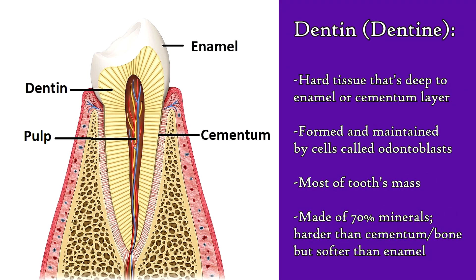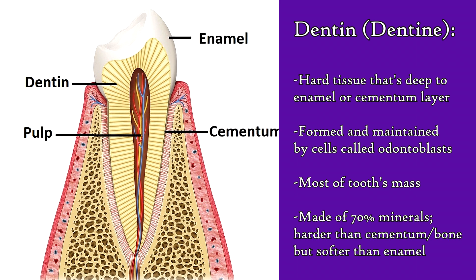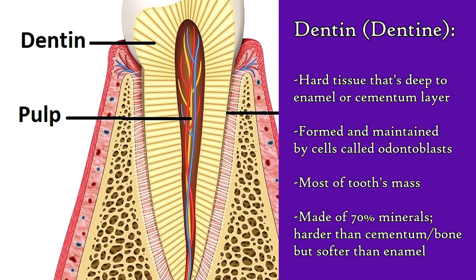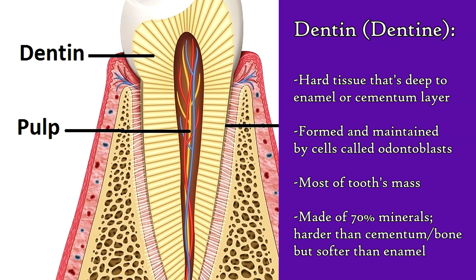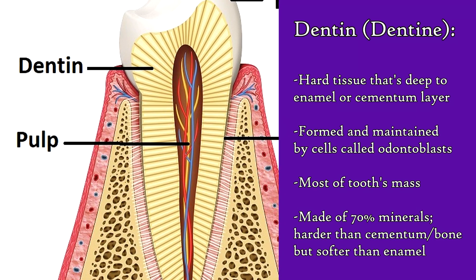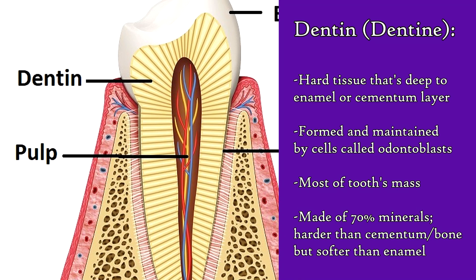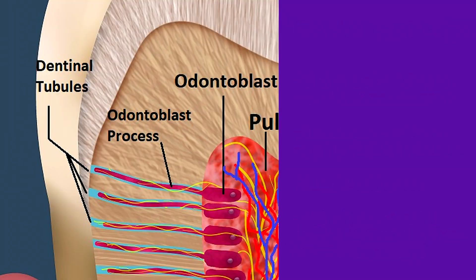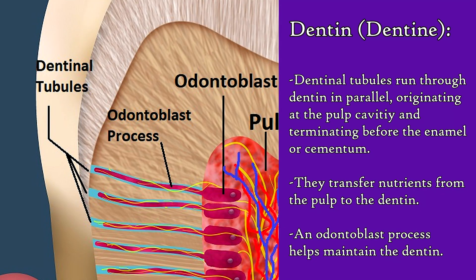A third type of tissue found in the tooth is called dentin, or sometimes dentine, and this is another hardened tissue that is deep to both the crown's enamel and the root's cementum. It is formed and maintained by cells called odontoblasts. As you can see, dentin accounts for most of the tooth's mass, and it contains a mineral content of around 70%, which makes it harder than cementum and even bone, yet softer than enamel. Dentinal tubules run through the dentin in a parallel pattern originating at the pulp cavity and ending just short of the enamel or cementum.